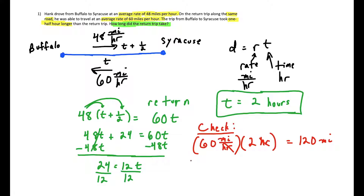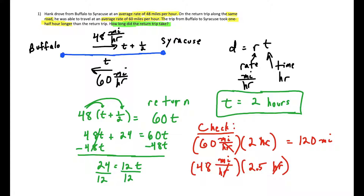For the first part of the trip, Hank drove at 48 miles per hour, but now for two hours plus a half hour — so 2.5 hours. Working it out: 48 plus 48 is 96, and 96 plus half of 48 is 96 plus 24, which is 120. Either way, the distances match up and confirm our answer is correct.